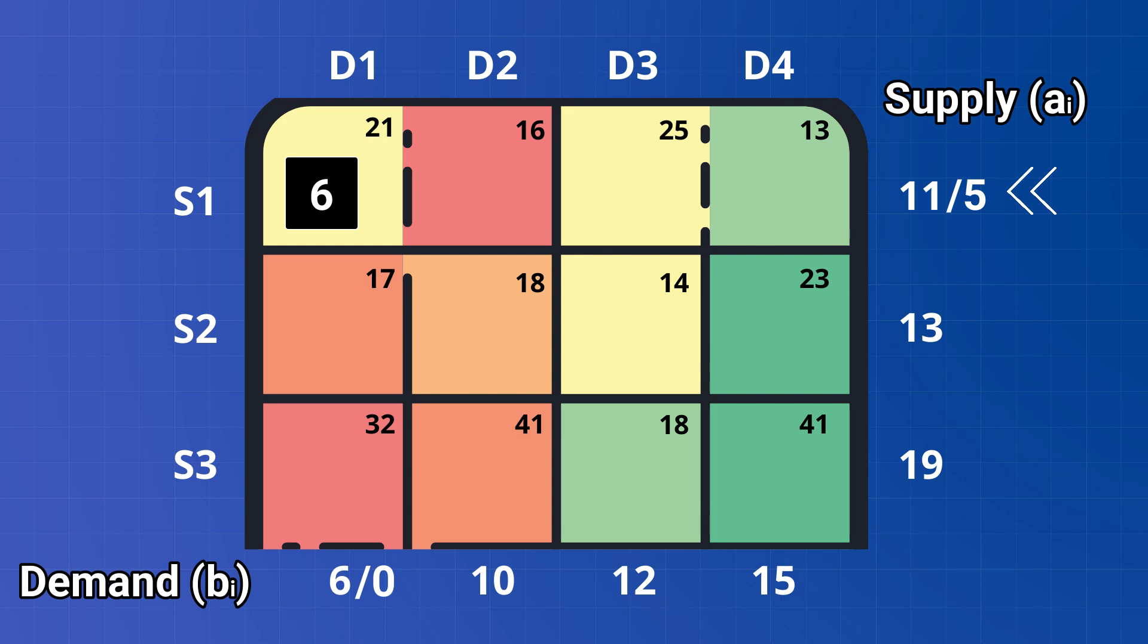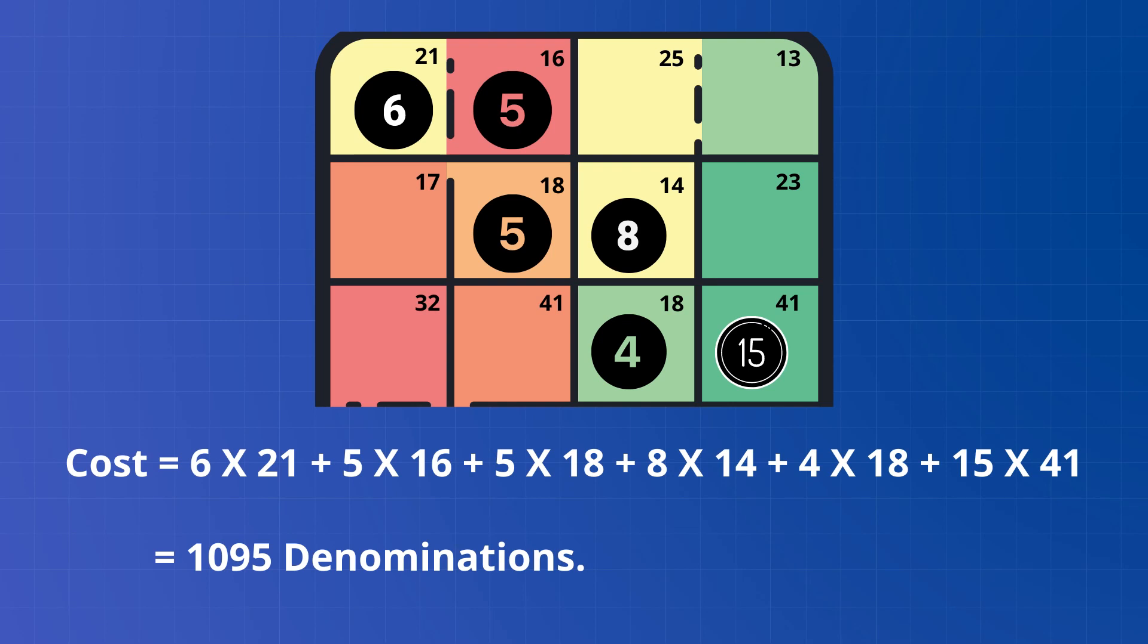Now since demand is exhausted or supply is greater than demand, that means b1 is less than a1. Move one cell right horizontally to the second column and allocate as much as possible. Repeat the process until only one cell is remaining. You are actually proceeding with allocations in every northwest corner cell of the matrix or table. Finally, we can have all the allocations as you can see here.